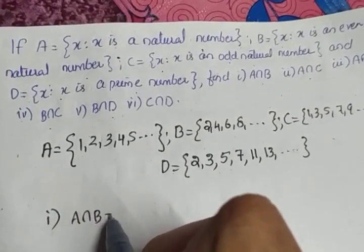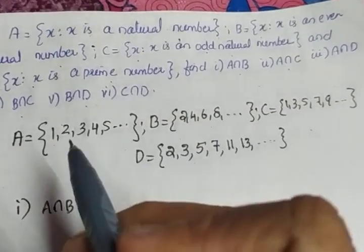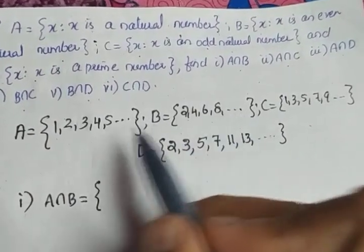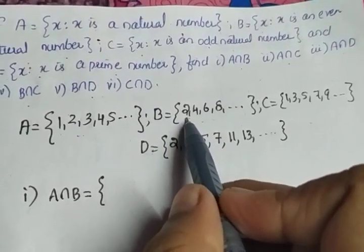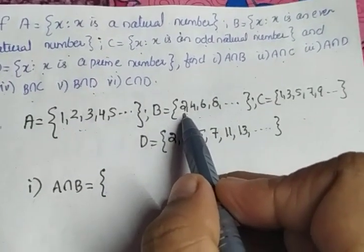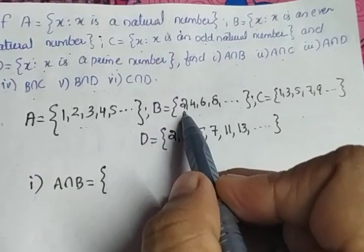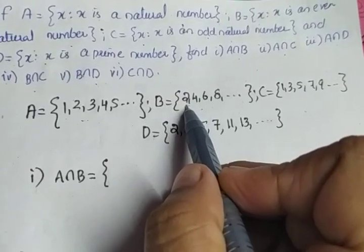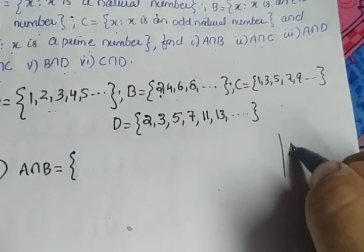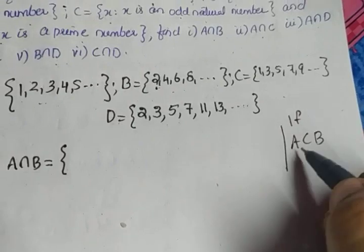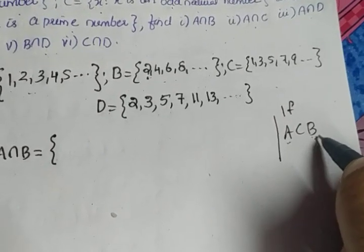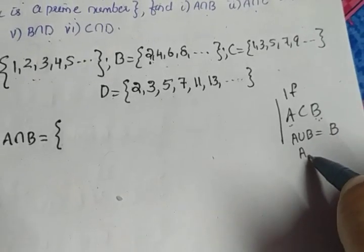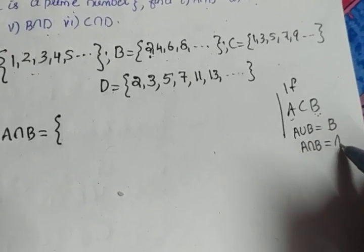First question: find A intersection B. A contains all elements from 1 to infinity and B contains only even integers, so B is a smaller set. Since B is a subset of A, while taking the union we get the bigger set, and while taking the intersection we get the smaller set.